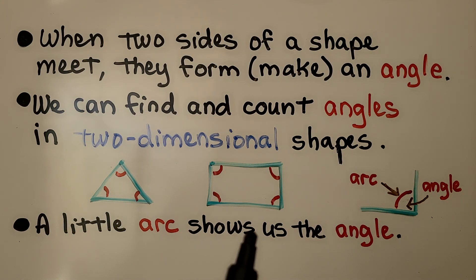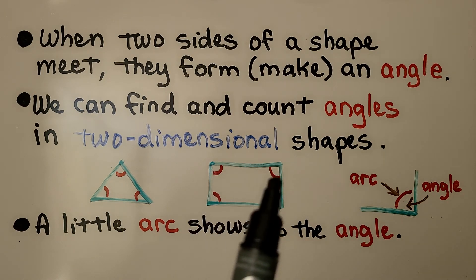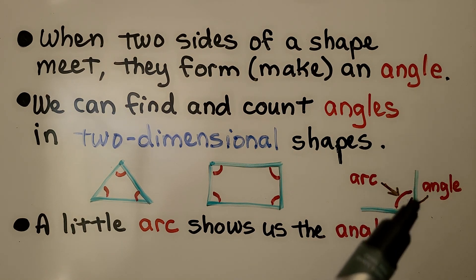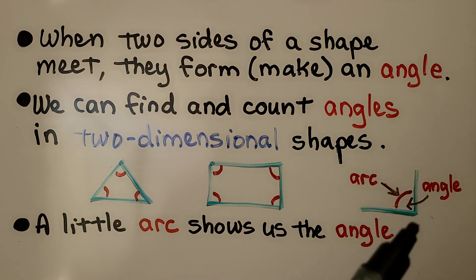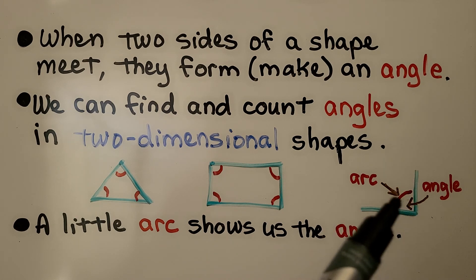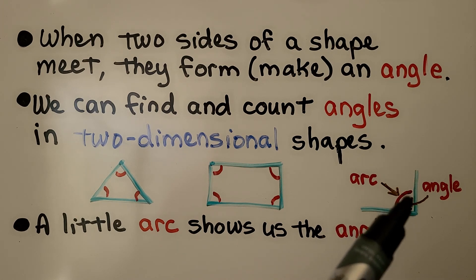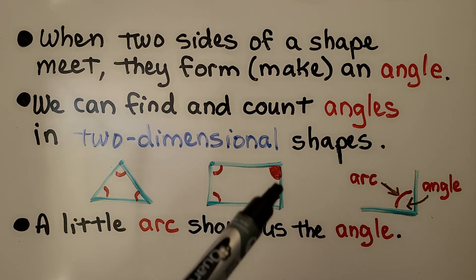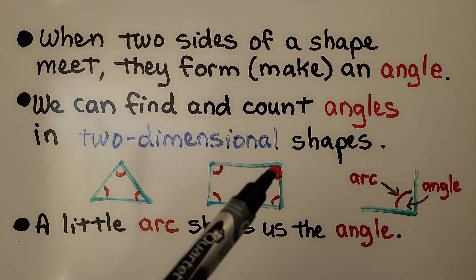Here we have a quadrilateral. It has one, two, three, four little arcs. It has four angles. The arc is formed when two sides meet. So here's the angle, and we have a little arc showing that the angle is right inside here — the little space that's made from the two sides meeting right in here. That's the angle.